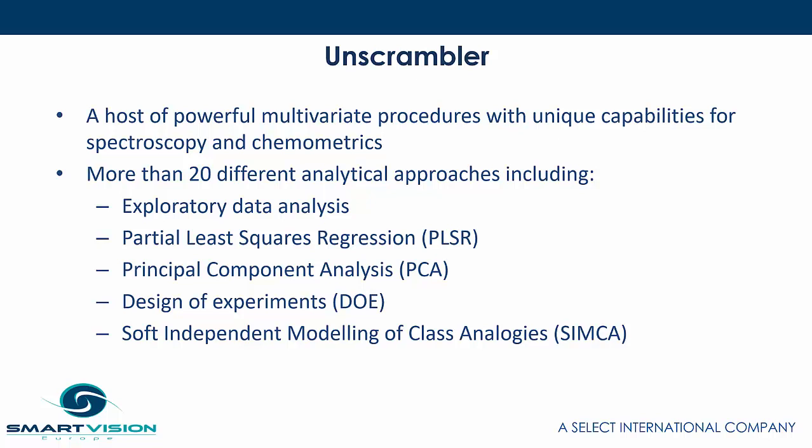Unscrambler itself offers a host of powerful multivariate procedures with lots of unique capabilities for things like spectroscopy and chemometrics. The sorts of procedures you would expect to see and use in Unscrambler include exploratory data analysis, partial least squares regression, principal components analysis, some design of experiments capabilities, and the ability to classify data using techniques such as SIMCA — soft independent modeling of class analogies.